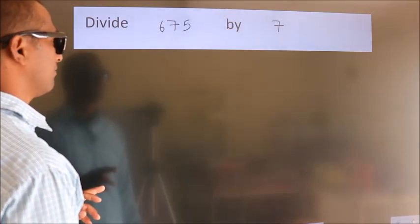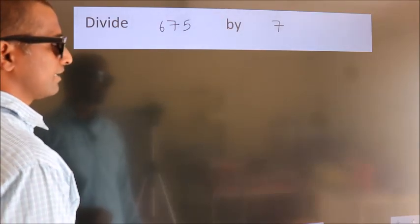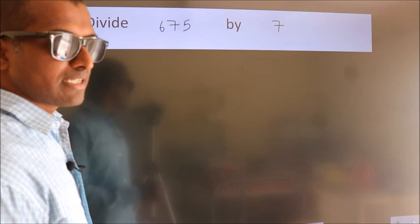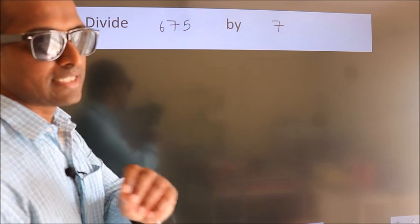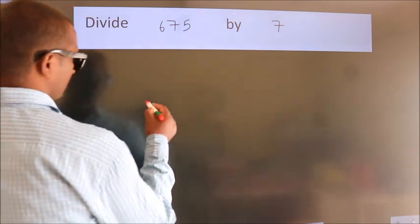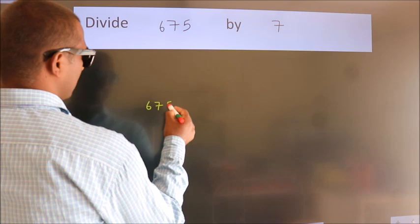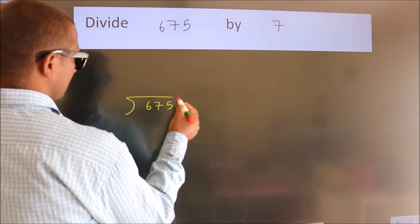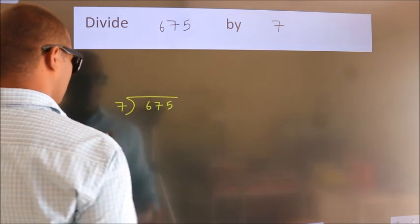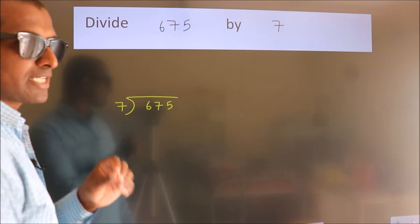Divide 675 by 7. To do this division, we should frame it in this way. 675 here, 7 here. This is your step 1.